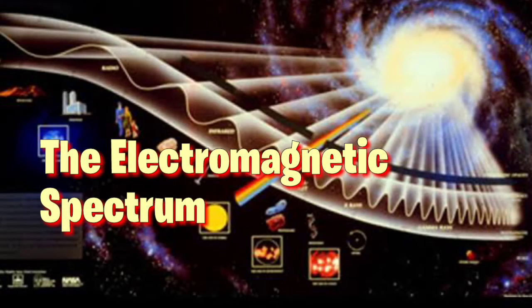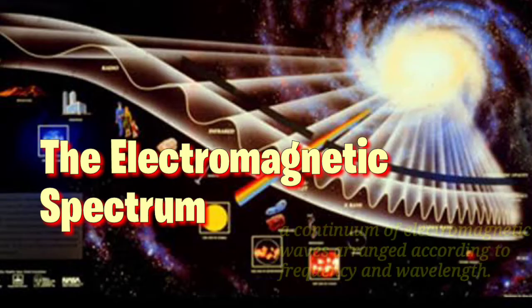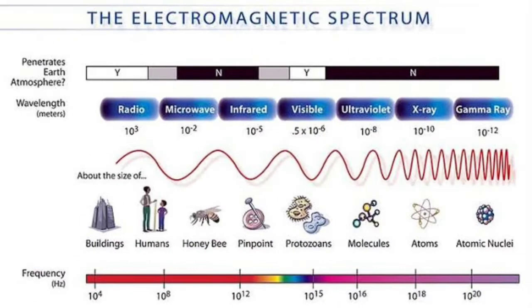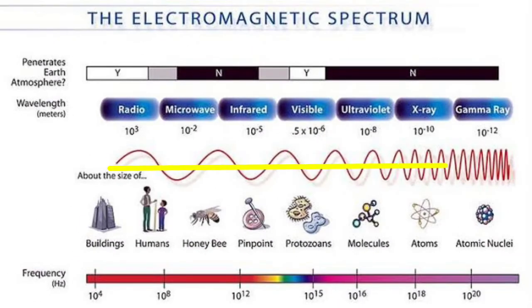Electromagnetic waves are arranged in order of wavelength and frequency in what is known as the electromagnetic spectrum, a continuum of electromagnetic waves arranged according to frequency and wavelength. It is a gradual progression from the waves of lowest frequencies to waves of highest frequencies. According to increasing frequency, the EM spectrum includes radio waves, microwaves, infrared, visible light, ultraviolet, x-rays, and gamma rays. These waves do not have exact dividing regions.